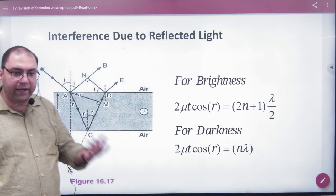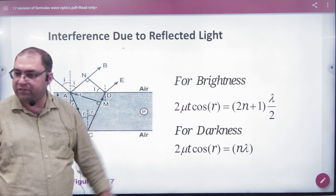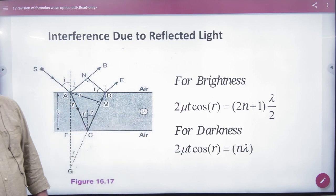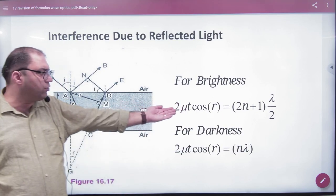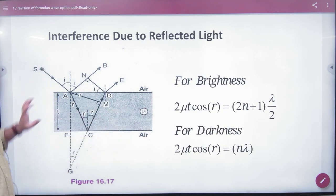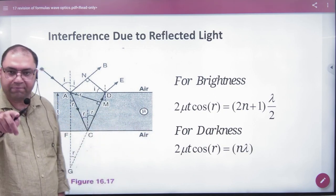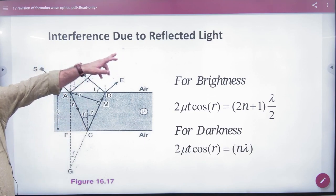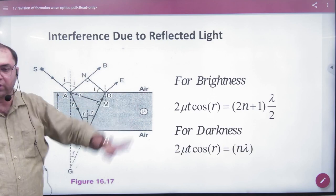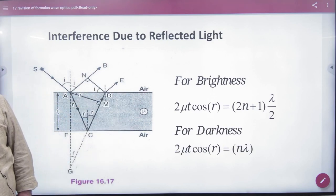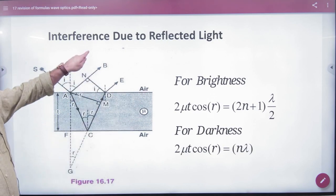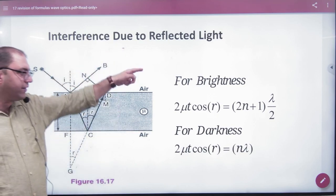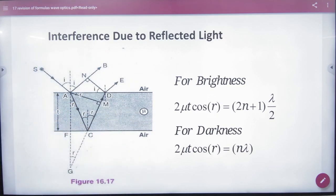When will the brightness come? When 2μt cos r = (2n+1) into lambda by 2. So it is nth darkness value. Mu means refractive index, t means thickness. And this is brightness condition. So please write a condition. Write topic formula booklet in wave optics heading interference due to film, thin film. In the first part is interference due to reflected light, which means brightness and darkness condition. And t means thickness of this film.